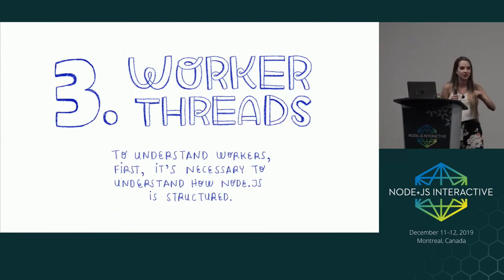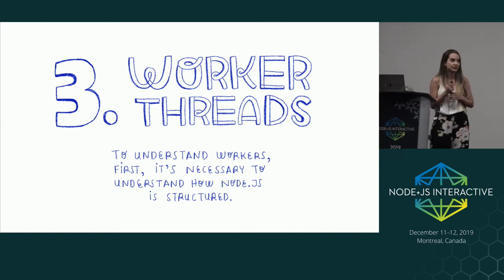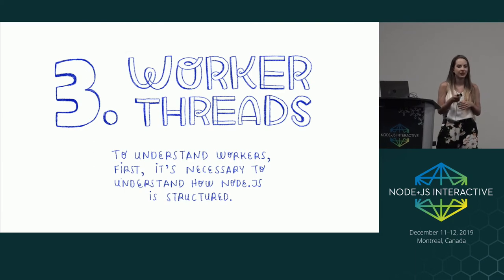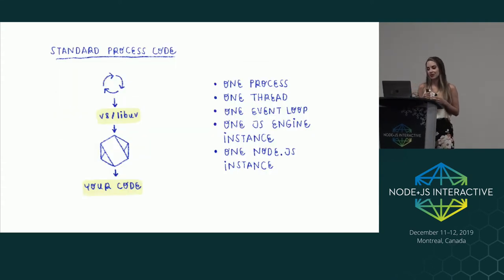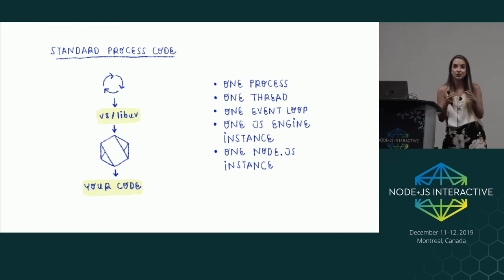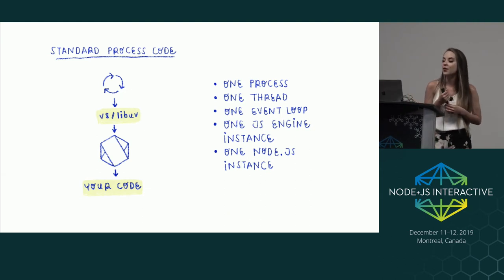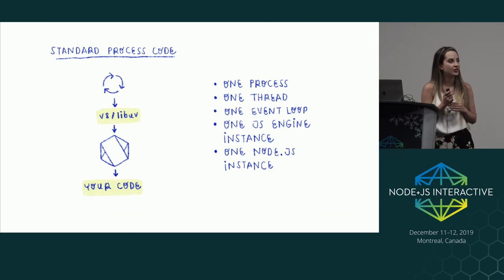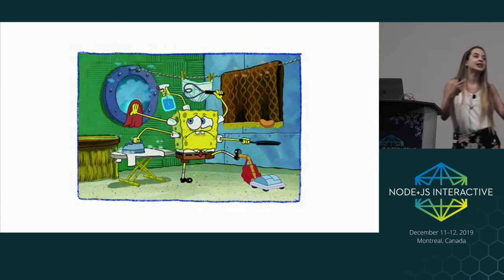Number three of hot topics of Node.js and JavaScript is worker threads. To understand workers, first it's necessary to understand how Node.js is structured — how does it work underneath? When Node.js is launched, it runs one process in one thread. Being single-threaded means that one set of instructions is executed at a time. One event loop is what allows JavaScript to be asynchronous by offloading operations to the system kernel whenever possible through async/await, callbacks, and promises. One JavaScript instance is the program that executes JavaScript code, and one Node.js instance is the program that executes Node.js code.